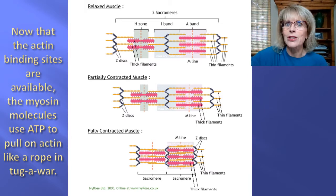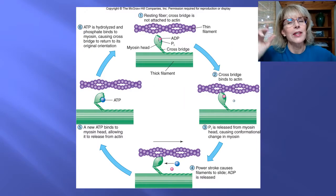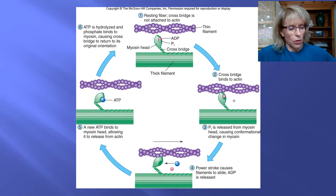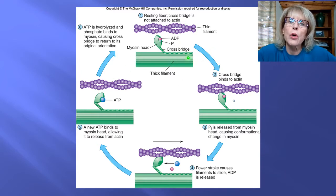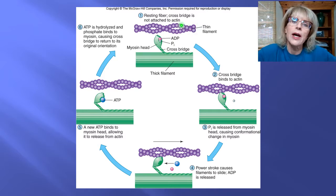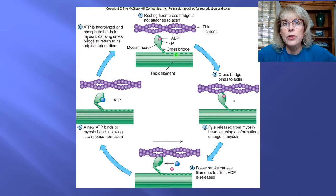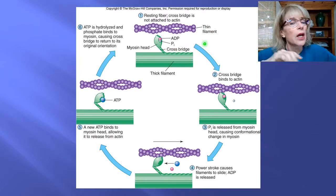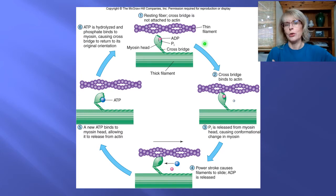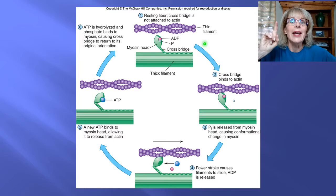We're going to talk about what myosin does and what the energy molecule ATP does. We're now looking at things at the molecular level. Actin is up here — each sphere is an individual actin protein organized in a quaternary structure. Down here is myosin, also part of a huge quaternary structure with millions of myosin molecules. Troponin and tropomyosin are not in this image because that was a different story. Now we're talking about what ATP does and what myosin does when it interacts with actin.